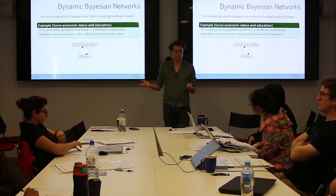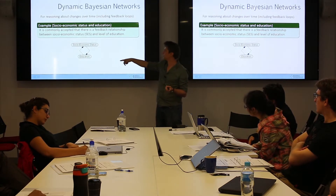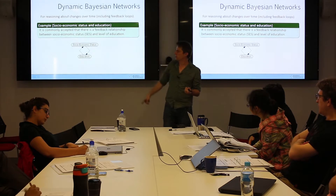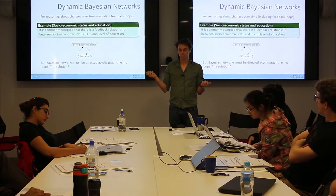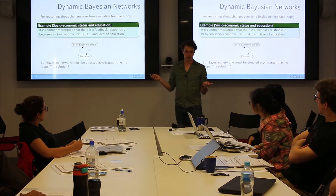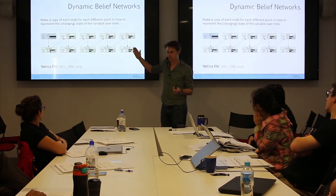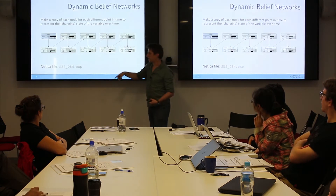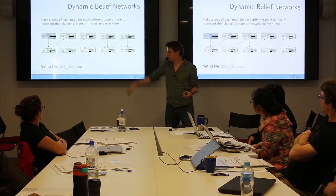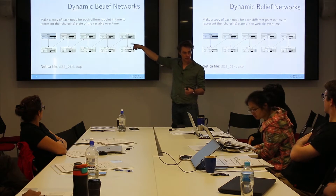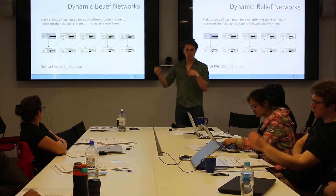However, we've got some real-world situations where we do actually know there are feedback loops in the system — for example, a feedback relationship between socio-economic status and education. Bayesian networks don't let us do this, so the solution is pretty straightforward: we make a copy of those variables for each temporal timestamp — like generations — so we have socio-economic status for generation one, two, three, and so on, all feeding into the corresponding education nodes.